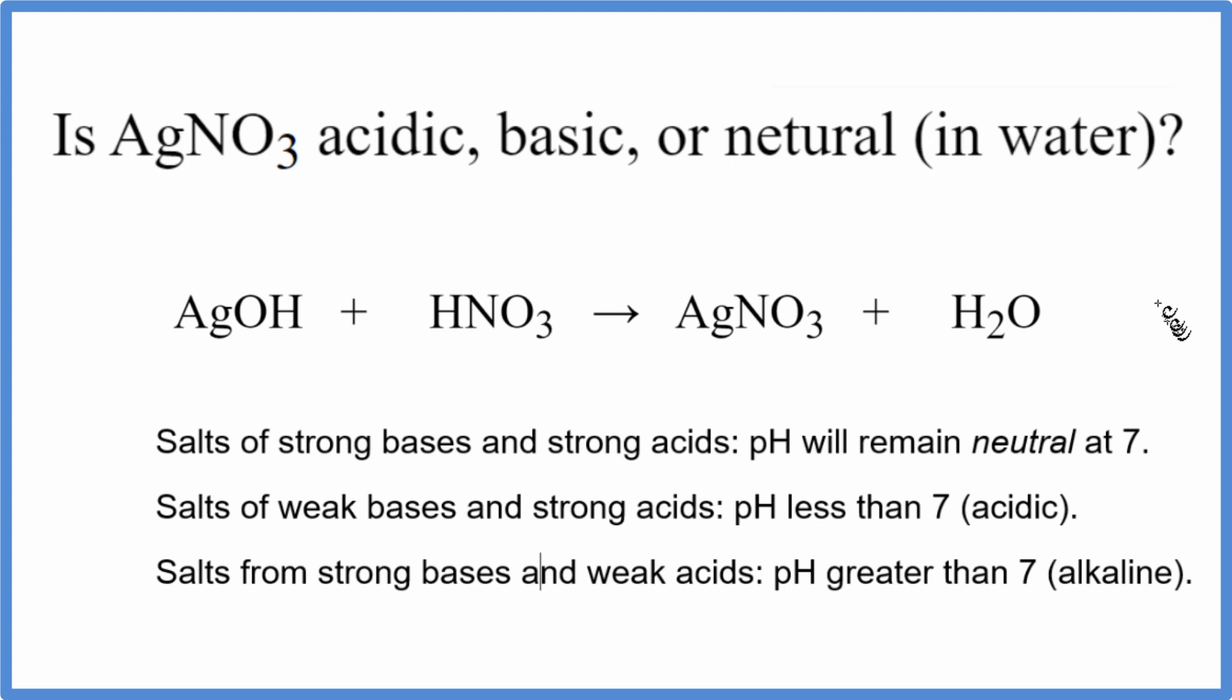To determine that, we need to look at the reaction that produced the silver nitrate, the neutralization reaction. So we have AgOH, that's our base, plus HNO3, an acid. That gives us silver nitrate and water, because this is a neutralization reaction.